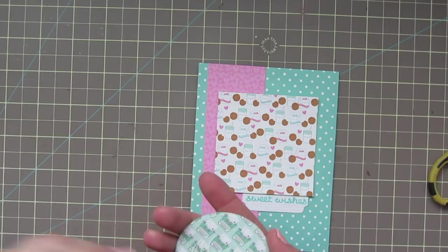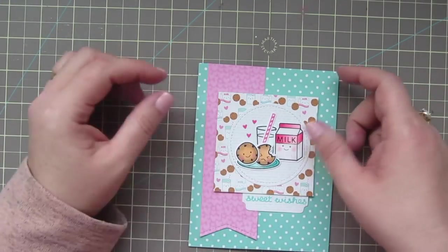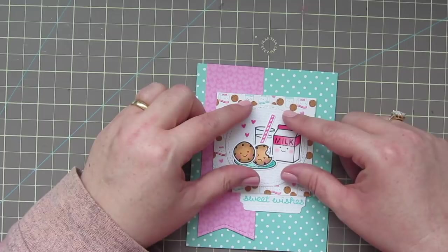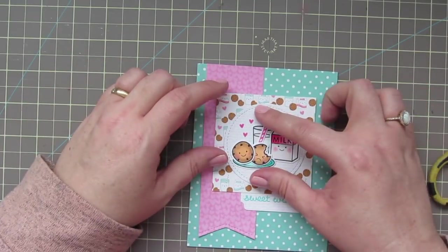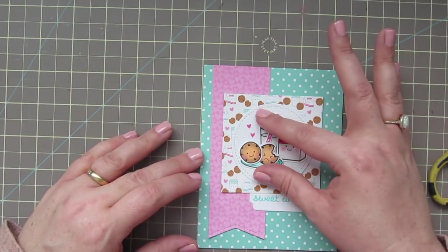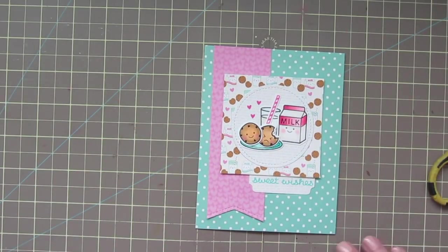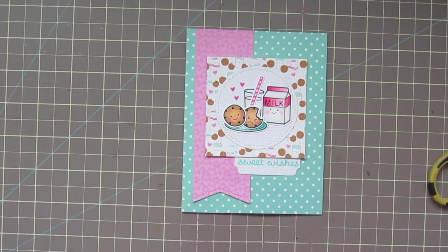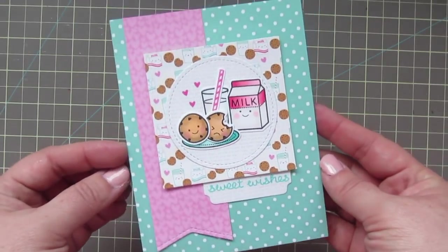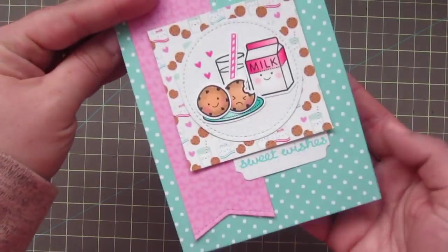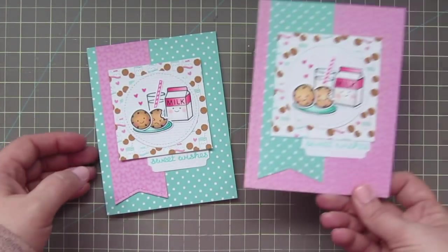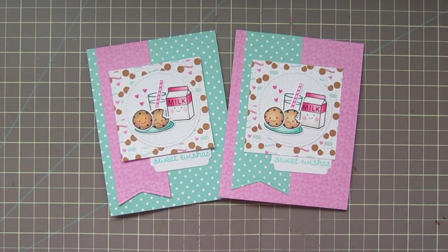I'll grab my focal panel and add a little bit more liquid glue to the back of that. I thought about popping it up with foam tape, but decided for the kids to just keep it nice and simple. So I'll just adhere that down in the center and make sure that that's nice and straight. And that is going to complete our card. I actually made two versions of this card with the extra patterned paper. So there's a closer look at the one that we just created, and then here is the second card that I made. So it's the same concept and design, but just a little bit different with the patterned paper.